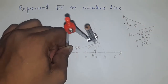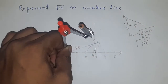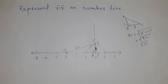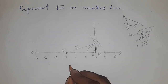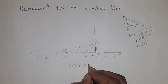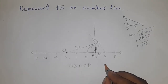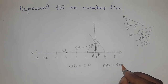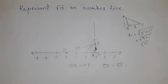Now taking OB with the compass and drawing an arc which cuts the number line at a point P. So we can write OB = OP, therefore OP = root 10. That's all — thanks for watching. If this video is helpful, please subscribe, like, and comment on my video.